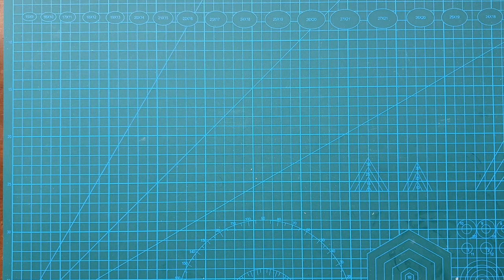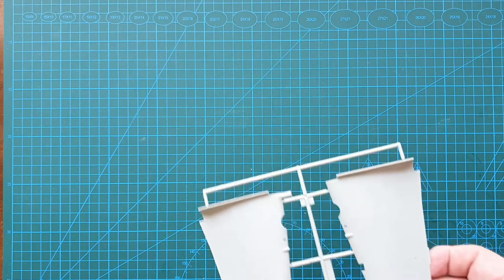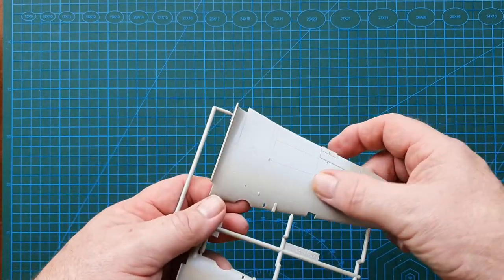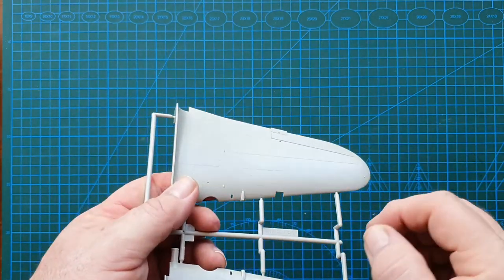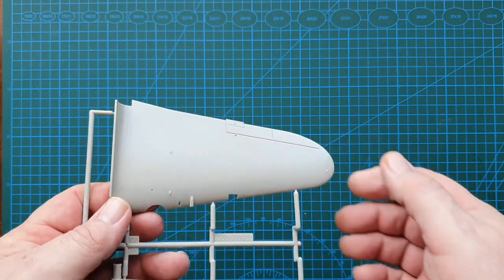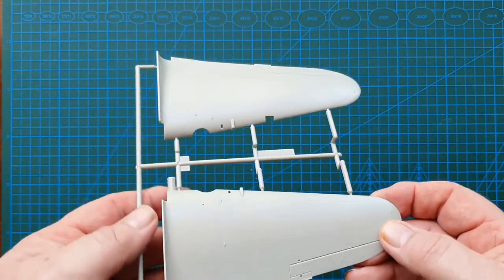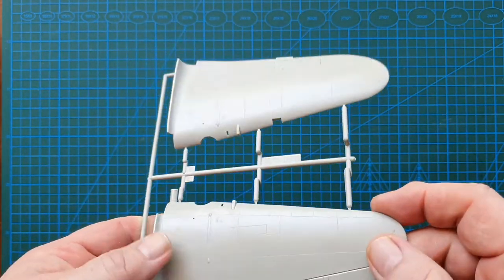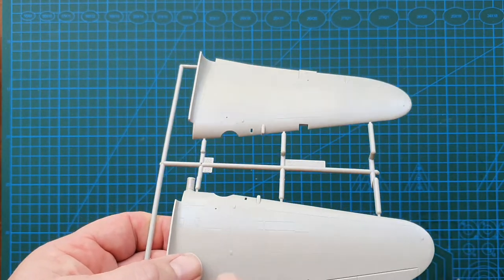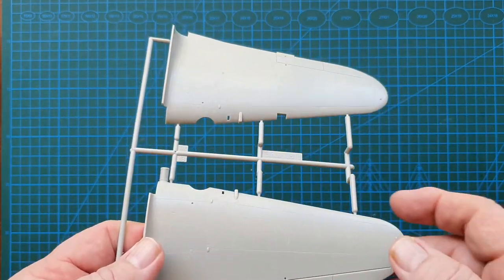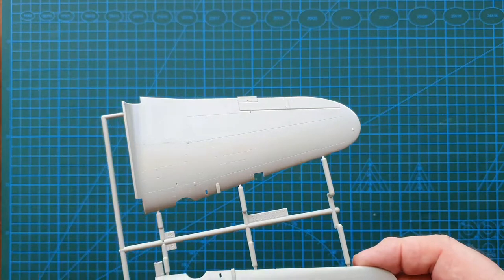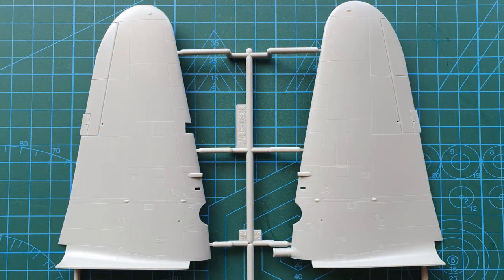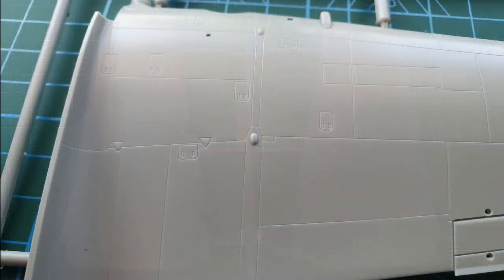Wings—this is the top. Nice recessed panel lines, not too deep. Fixed ailerons—I guess you can't have everything, but the detail is very crisp. It is actually really, really crisp, especially around the little hatches and things like fuel hatches on the wing. Not bad at all.